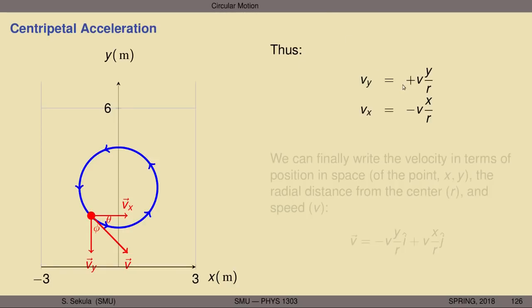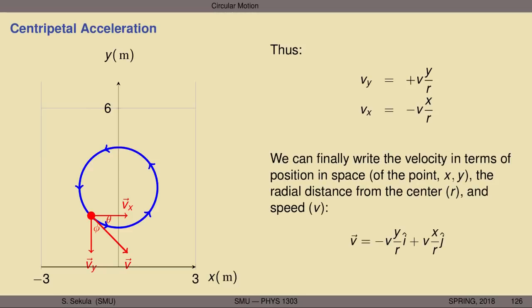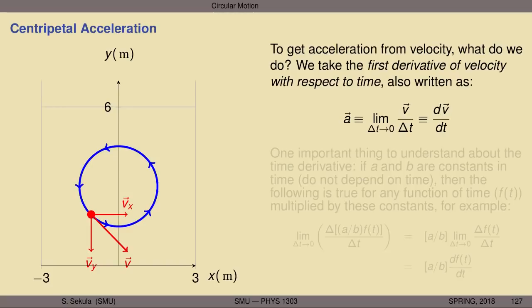Substituting: the two minus signs in Vy cancel to give Vy = Vy/R... working through carefully, we arrive at the velocity vector written in terms of x, y, V, and R: v⃗ = (−Vy/R) î + (Vx/R) ĵ, with an overall factor of V. In uniform circular motion, V never changes, so the speed is constant. Now, to get acceleration from velocity, we take the first derivative of the velocity vector with respect to time.